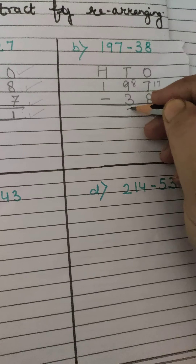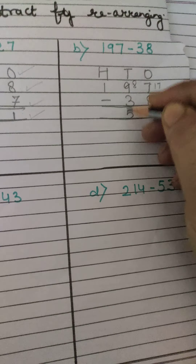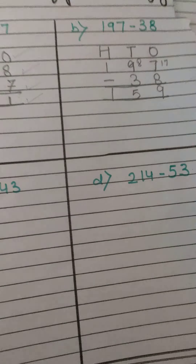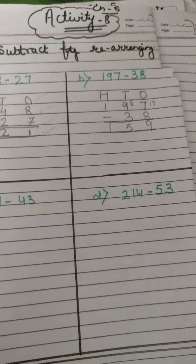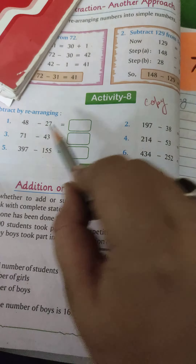So you have arranged it. First, 1's and 10's. Then bigger number, then smaller number. This is the difference.